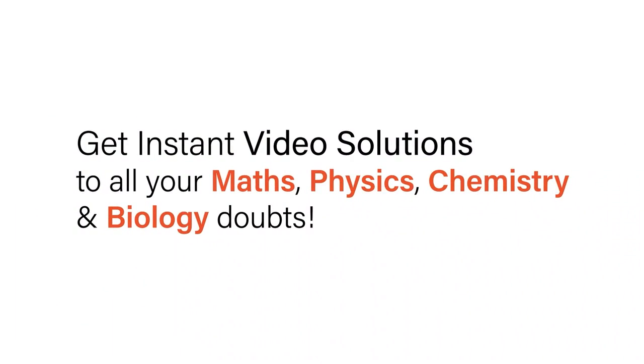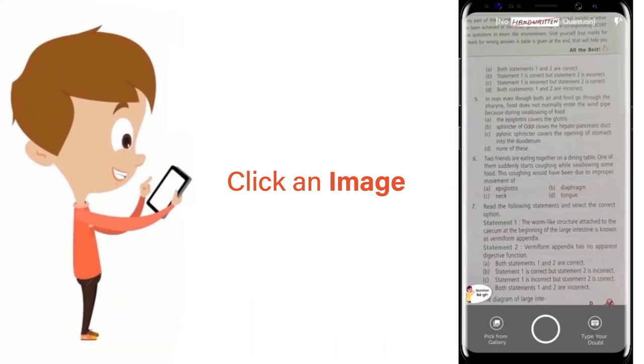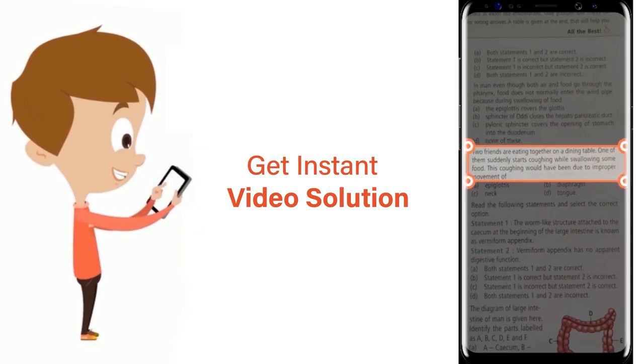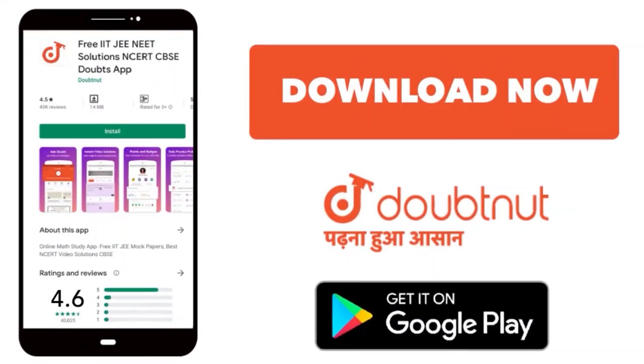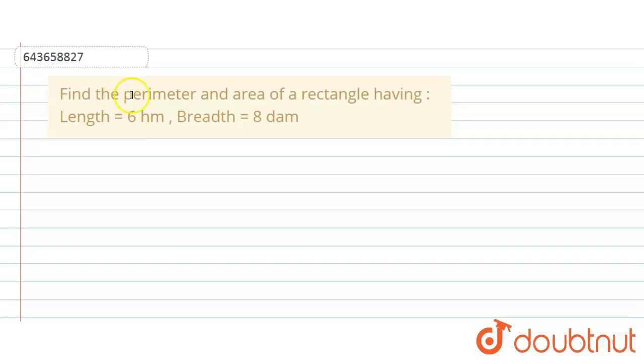With Doubtnet, get instant video solutions to all your math, physics, chemistry, and biology doubts. Just click the image of the question, crop the question, and get instant video solution. Download Doubtnet app today. Hello everyone, the question says find the perimeter and area of a rectangle having length equal to 6 hectometer and breadth 8 decameter.